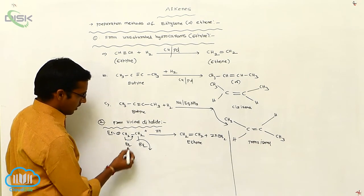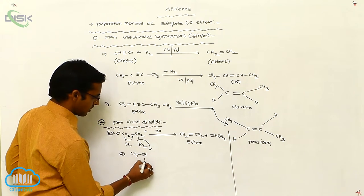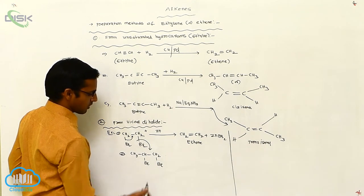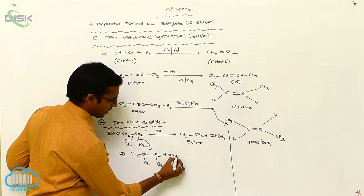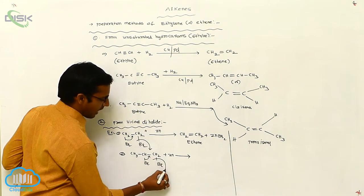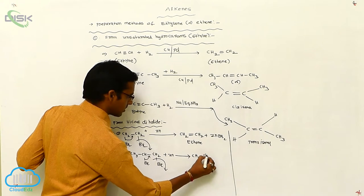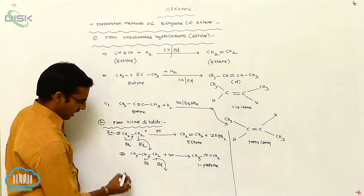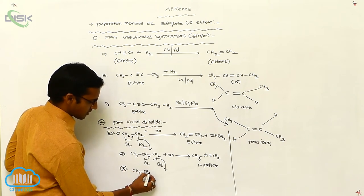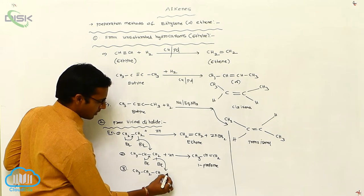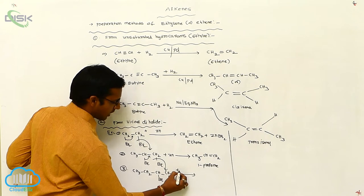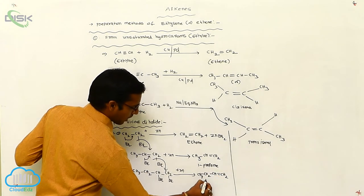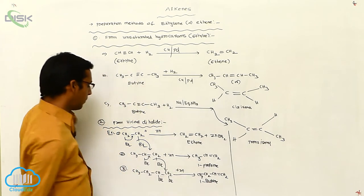For example, CH₃CHBr–CH₂Br (four atoms total) in the presence of zinc metal undergoes dehalogenation to give CH₃CH=CH₂, which is 1-propene. Another example: CH₃CH₂CH₂CHBrCH₂Br in the presence of zinc metal gives CH₃CH₂CH₂CH=CH₂. With four carbons, this is butene.